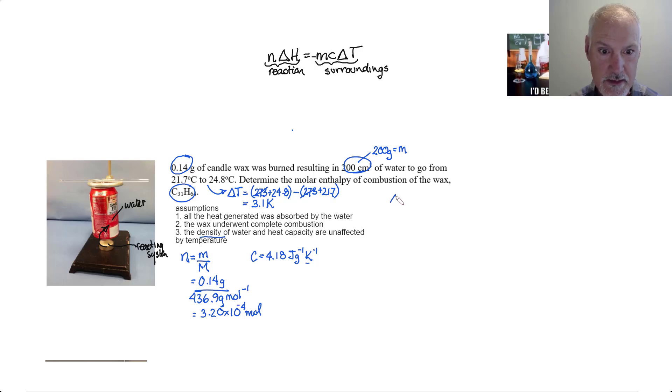Let's go over to the equation now and just rearrange it so that we can get delta H on one side and it'll be minus MC delta T and all that information is from the surroundings divided by the number of moles of my reacting fuel.